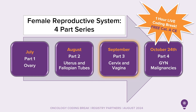That's all we have for today. Be sure to tune in for Part 3 with cervix and vagina anatomy and staging in September, and mark your calendars for the live coding break on October 24th, where we'll wrap up the series with GYN grade coding, histologies, treatments, and case scenarios. This will be awarded one free category A CE at the end of that webinar. We will see you back here in September.